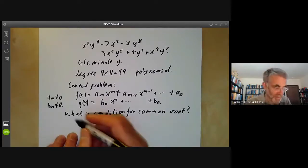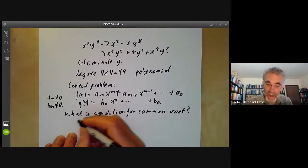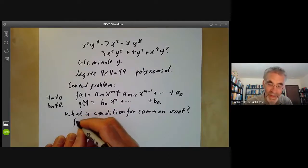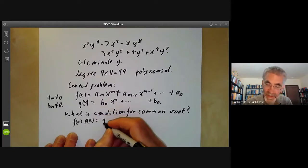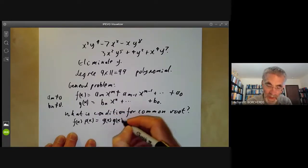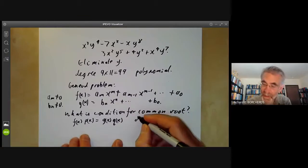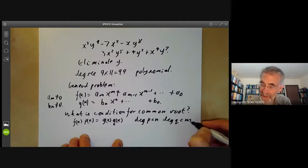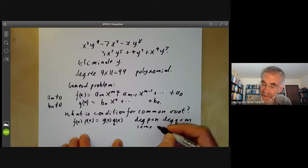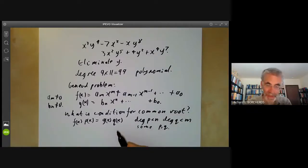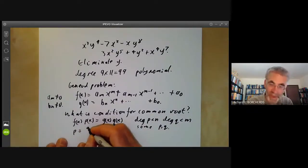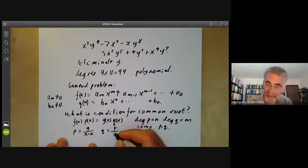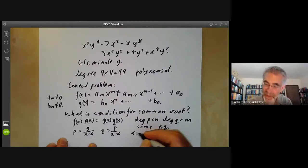Well, the condition for these to have a common root can be written as follows. If they have a common root, then f of x times p of x equals g of x times q of x, where degree p is less than n and degree q is less than m for some polynomials p and q. And if they have a common root, then you can just put p equals g over x minus alpha and q equals f over x minus alpha. But alpha is the common root.